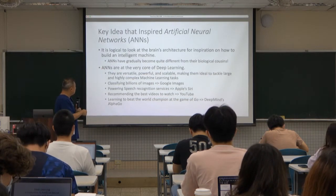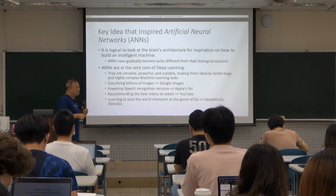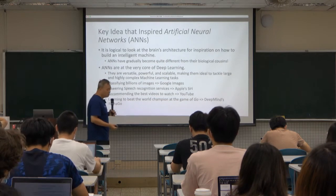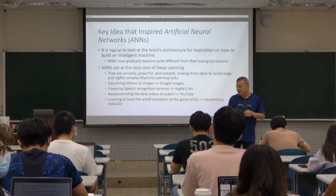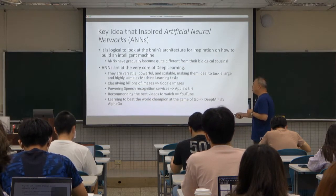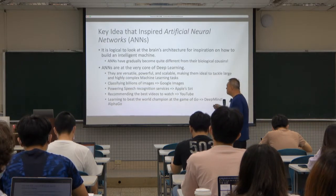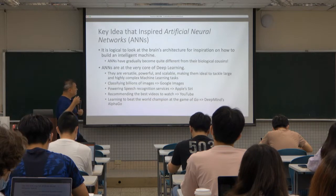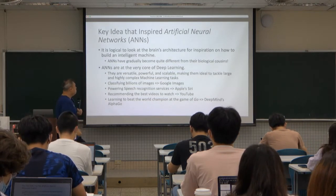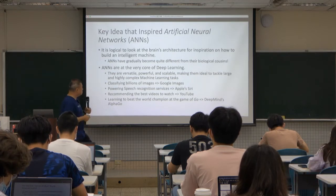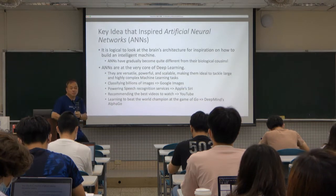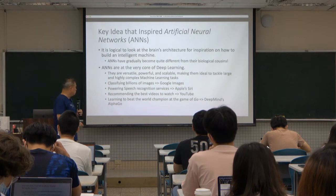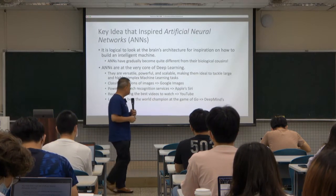Artificial neural networks are very much the core of deep learning. They are versatile, powerful, stable, and scalable. Nowadays we use artificial neural networks to do many highly complex tasks. For example, Google Images uses ANN to classify billions of images. Apple Siri uses ANN to do speech recognition. YouTube uses ANN to recommend videos to customers. And not to mention DeepMind's AlphaGo, which uses ANN to beat the world champion in the game of Go.